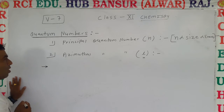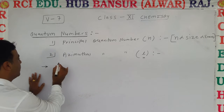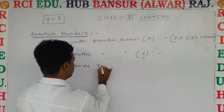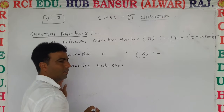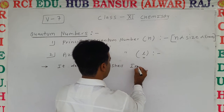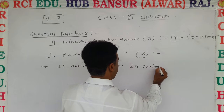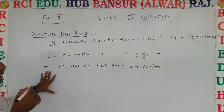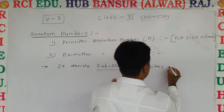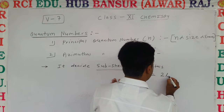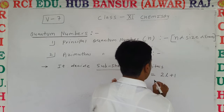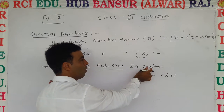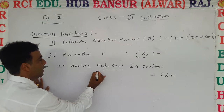What is the feature of the azimuthal quantum number? It decides the sub-cells in orbitals. The number of sub-cells in an orbital is decided by the azimuthal quantum number on the basis of the formula 2l + 1. Using 2l + 1, we determine how many sub-cells there will be inside an orbital.